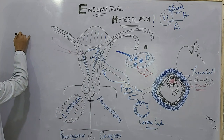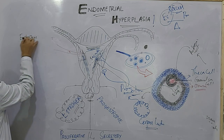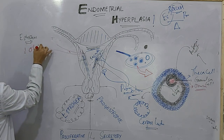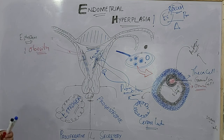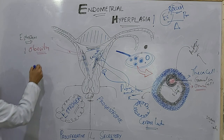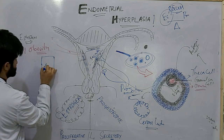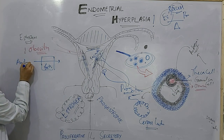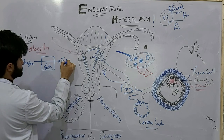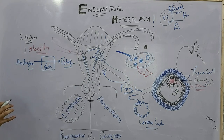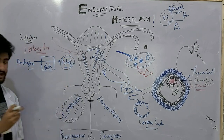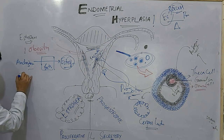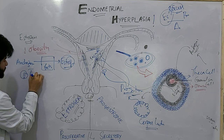Now let's discuss the causes of estrogen excess. Number one is obesity, a very common cause and risk factor. In obesity, there is a large amount of fat tissue. In the adipose tissue, androgens are converted into estrogens, so we have estrogen excess, which leads to endometrial hyperplasia.